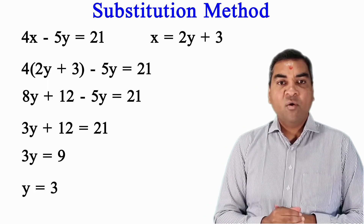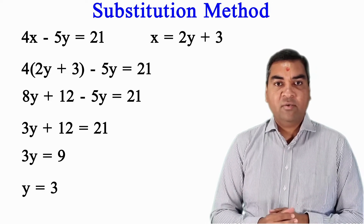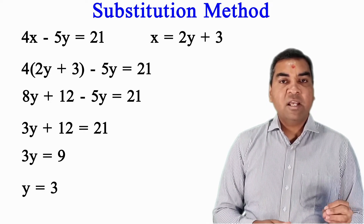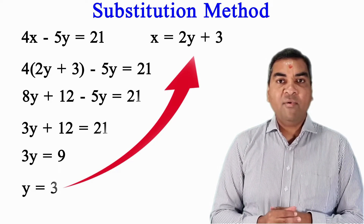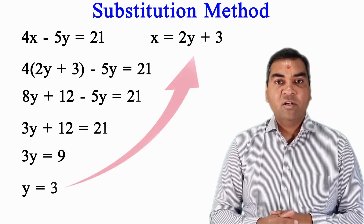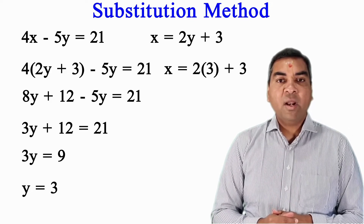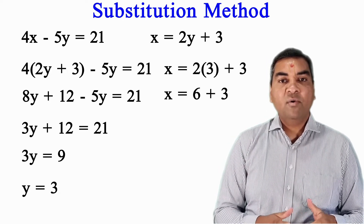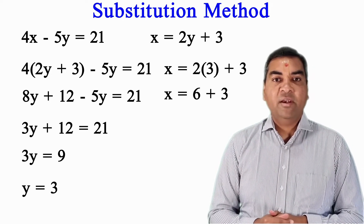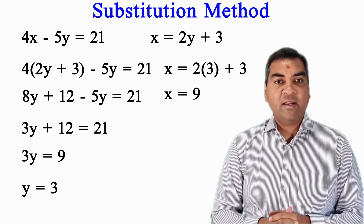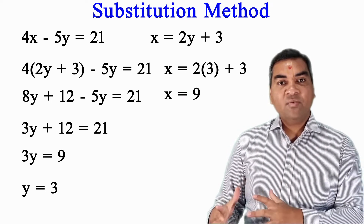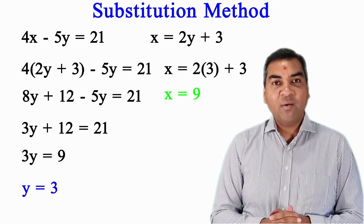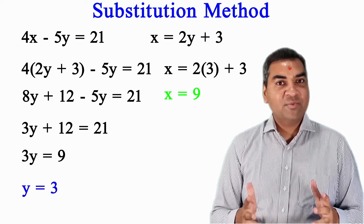So y equal to 9 divided by 3, which is y equal to 3. Now substitute y equal to 3 into the second equation: x equal to 2 times 3 plus 3, so x equal to 6 plus 3, so x equal to 9. My solutions are x equal to 9 and y equal to 3. Congratulations — you have learned and mastered the substitution method!